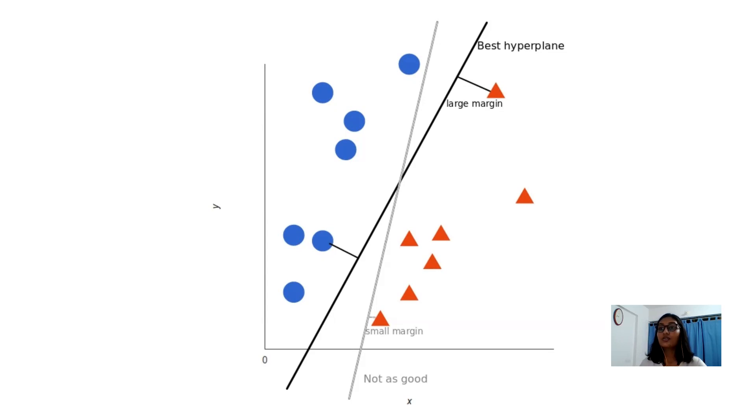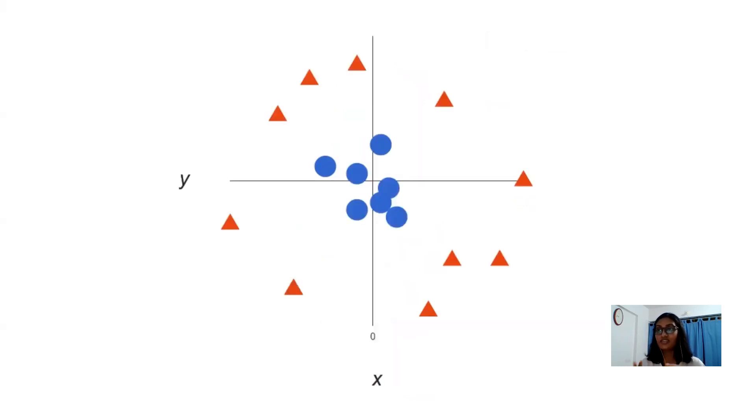Thereafter, now this example was easy since clearly the data was linearly separable. We could draw a line straight to separate red and blue. Sadly, usually things aren't that simple. For example, this example, the image that you are seeing over here, there clearly cannot be a linear boundary separating them. Then how should we separate them?